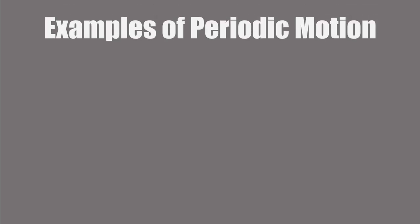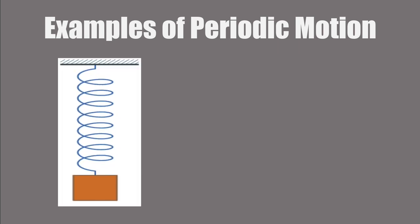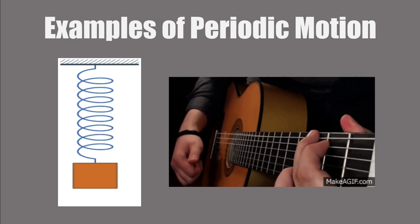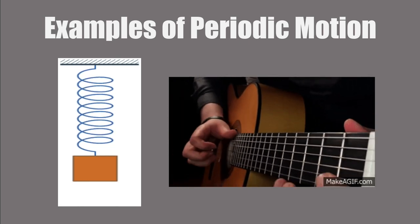The textbook describes various systems that exhibit periodic motion, such as the oscillations of a mass string system, vibrations of guitar strings, and the motion of a simple harmonic oscillator.